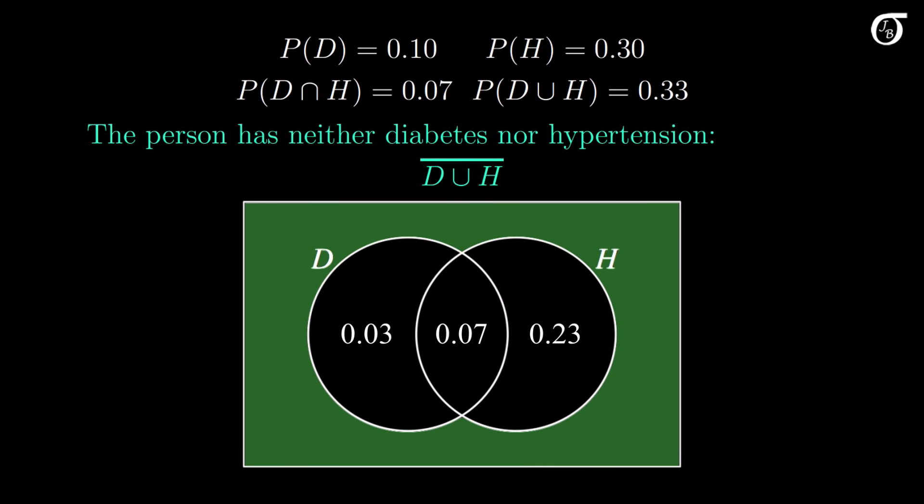The event that the person has neither diabetes nor hypertension is the complement of the union of D and H. Since the probability of the union is 0.33, the probability of neither is 1 − 0.33 = 0.67. Setting up a Venn diagram like this often helps us visualize probability problems and makes them much easier to solve.